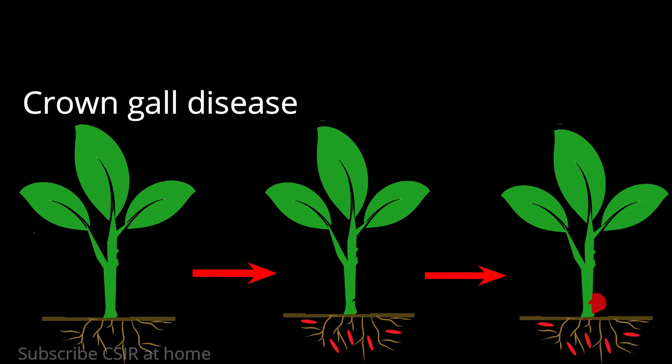This crown gall tissue represents true oncogenic transformation. The undifferentiated callus from crown gall tissue can be cultivated in vitro, even if the bacteria are killed with antibiotics, because this crown gall tissue retains tumorous properties. These properties include the ability to form a tumor when grafted into a healthy plant, and the capacity for unlimited growth as a callus in tissue culture, even in the absence of phytohormones.